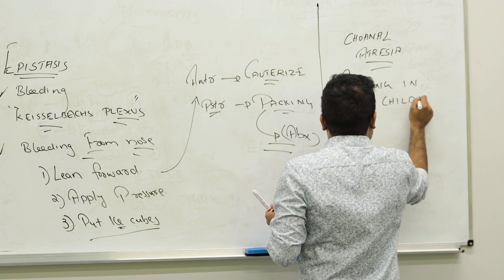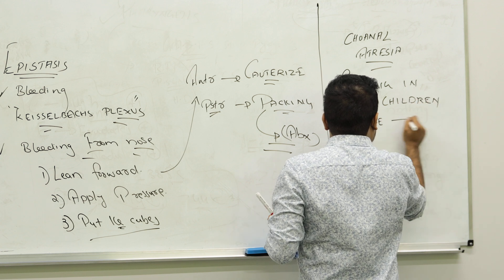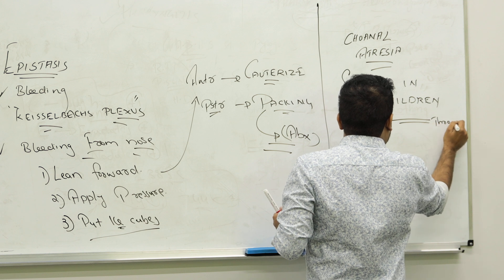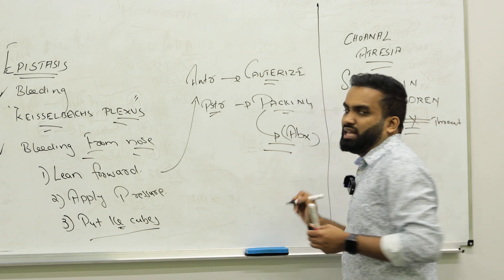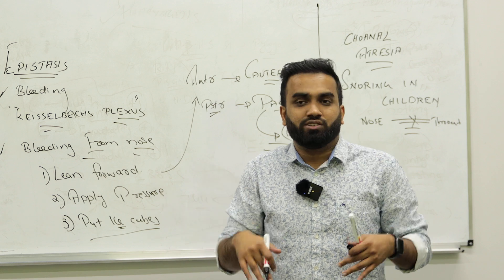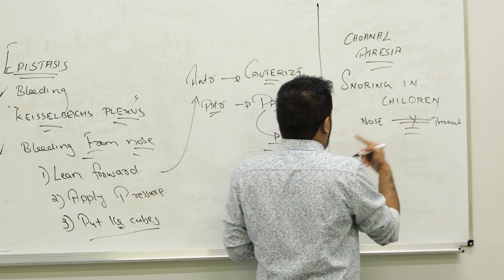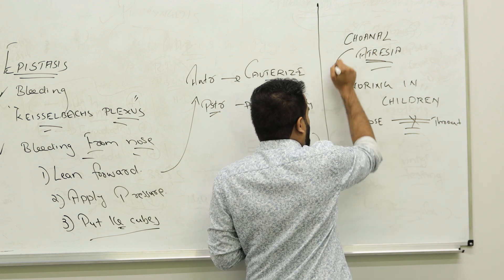Snoring in children. It means there is a block from nose to throat. There is something blocking their breathing. They can't get their oxygen inside to the trachea, to the lungs. There is a block there. So this scenario in choanal atresia.